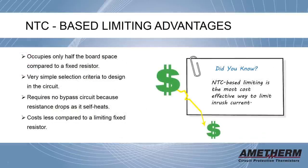NTC-based limiting has several advantages. First, it occupies only half the board space compared to a fixed resistor. Second, it has a very simple selection criteria to design in the circuit. Next, it also requires no bypass circuit, because resistance drops as it self-heats. And lastly, it costs less compared to a limiting fixed resistor. In fact, NTC-based limiting is the most cost-effective way to limit inrush current.